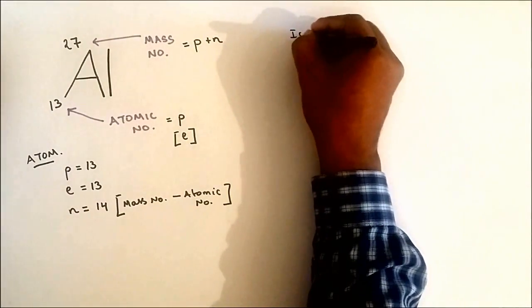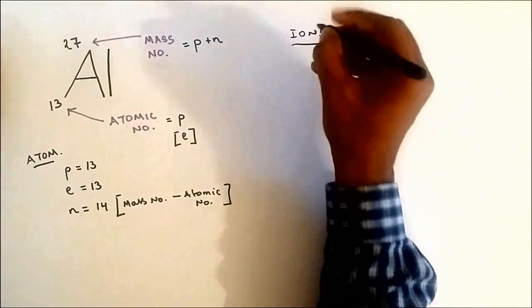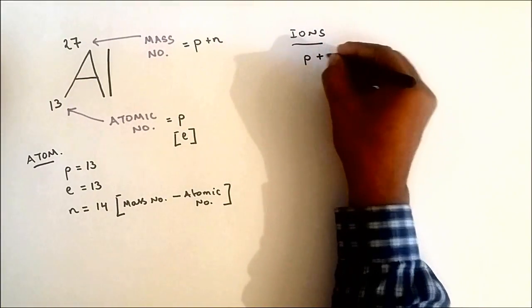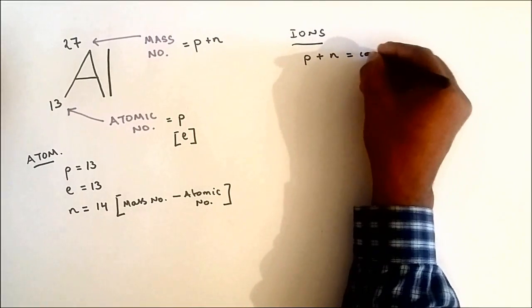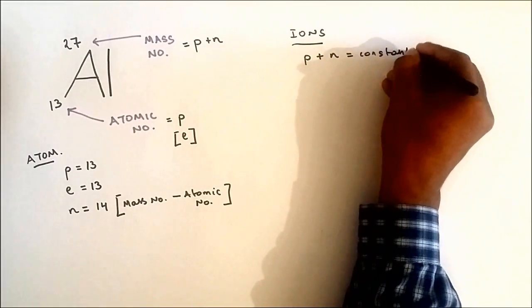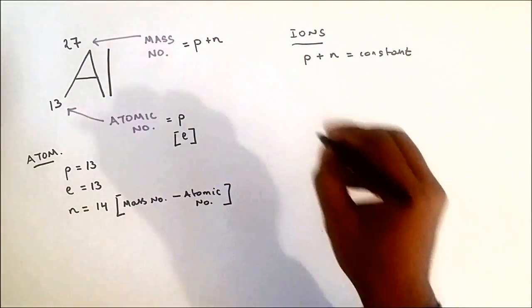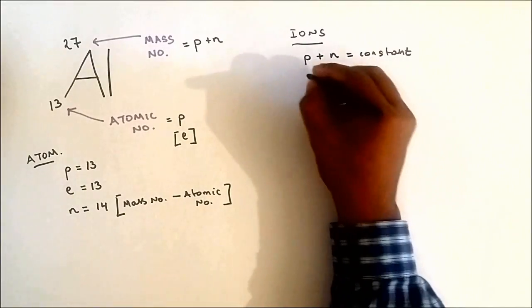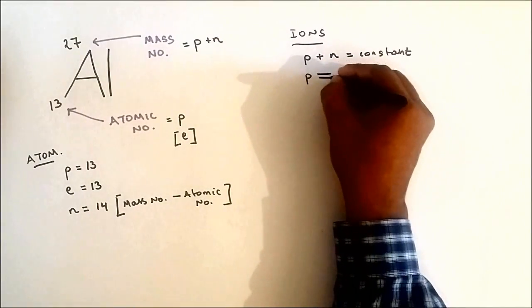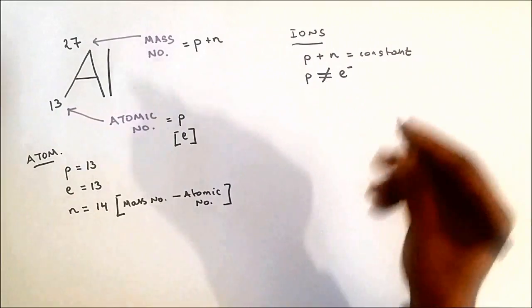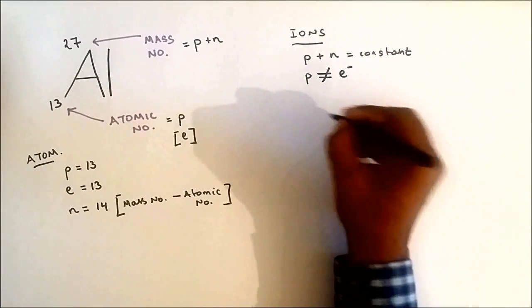The important thing in ions: the protons and the neutrons are constant, so the number of protons and neutrons doesn't change, but the electrons is different. So we will not expect the number of protons and electrons to be equal. Obviously there's two types of ions.